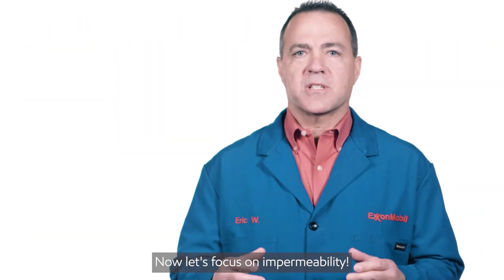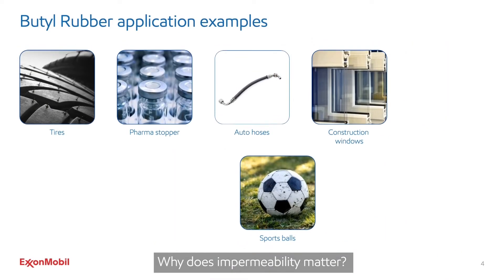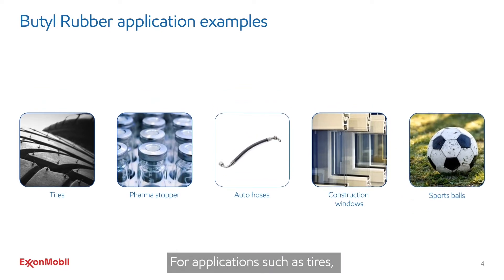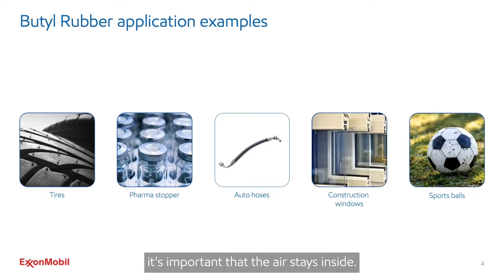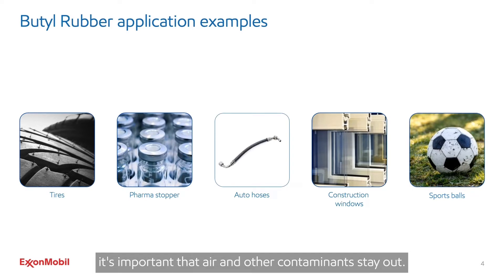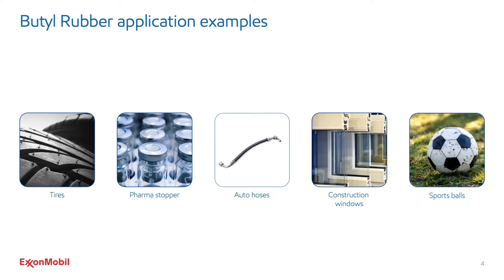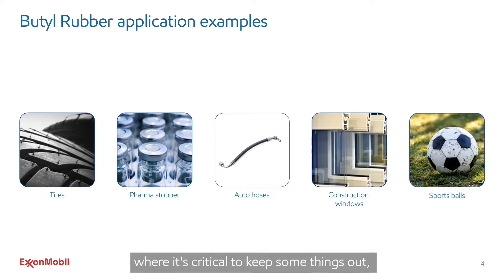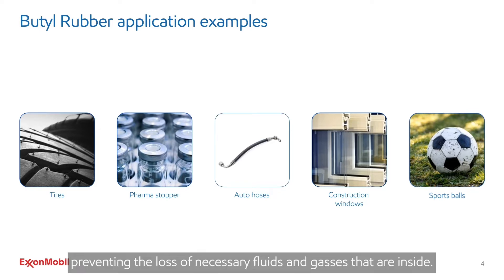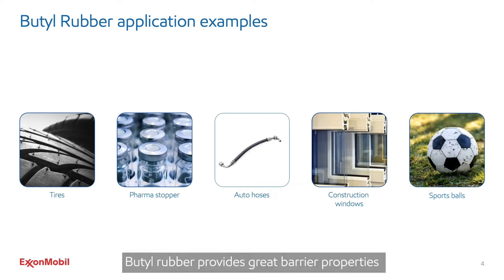Now, let's focus on impermeability. Why does impermeability matter? For applications such as tires, footballs, and soccer balls, it's important that the air stays inside. But for pharmaceutical stoppers, it's important that air and other contaminants stay out. There are also some other applications such as auto hoses and even construction windows where it's critical to keep some things out like moisture and air, while at the same time preventing the loss of necessary fluids and gases that are inside. Butyl rubber provides great barrier properties for all of these applications.